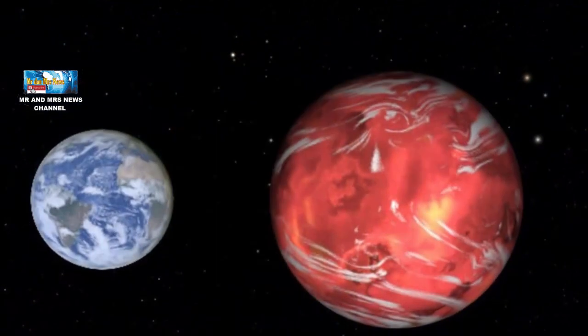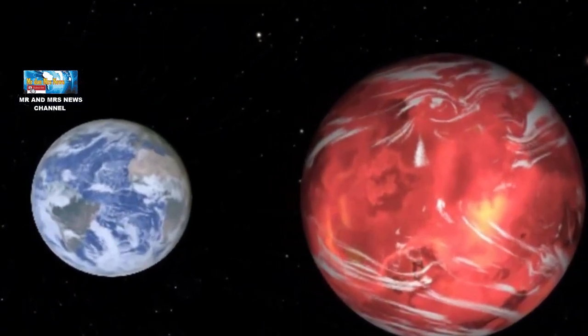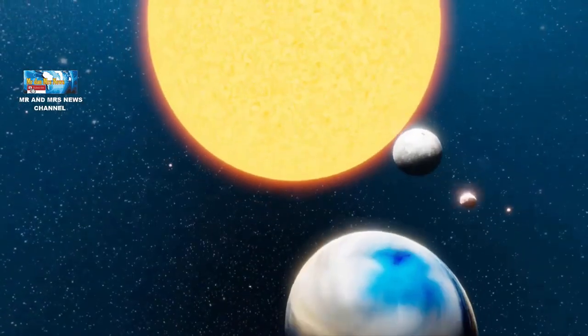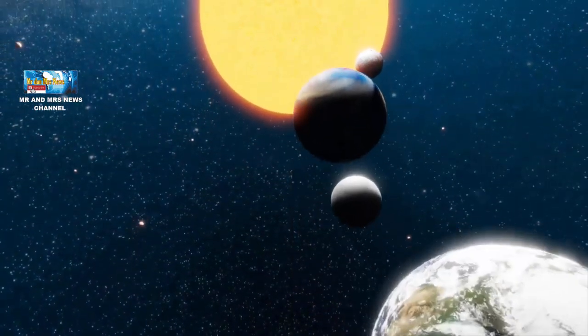Sebuah planet yang relatif kecil mengorbit pada jarak bintangnya di mana suhu kondusif untuk air dapat mencair di permukaan. Inilah yang dikenal sebagai zona layak huni.